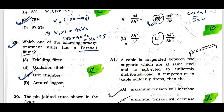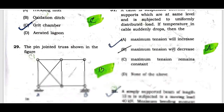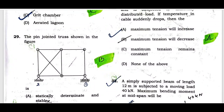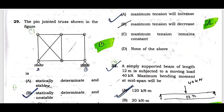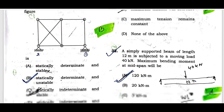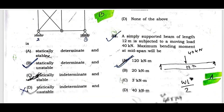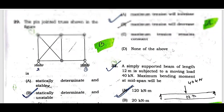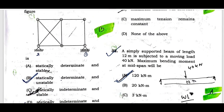Question number twenty-eight: Which one of the following sewage treatment units has a parshall flume? The answer is grit chamber. Question number twenty-nine: For the pin-jointed truss shown in the figure, it is statically determinate but unstable. Option B is the correct one.